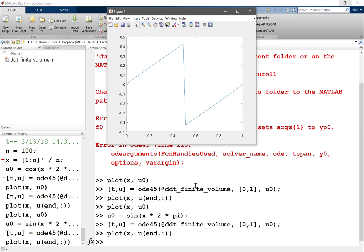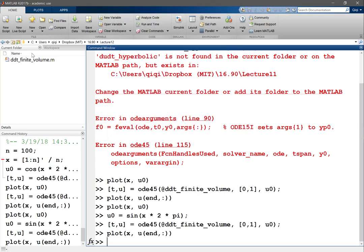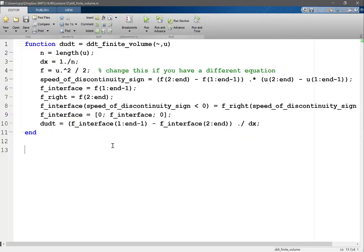A way to deal with the previous case is by modifying the boundary condition a little bit. So after you compute this, you can set—instead of setting the flux at the right interface to zero—I'm just going to set it to f_end.